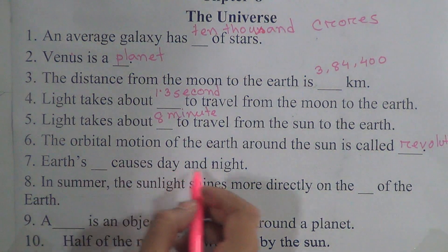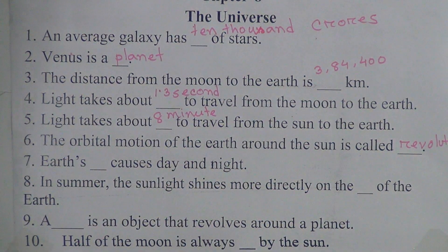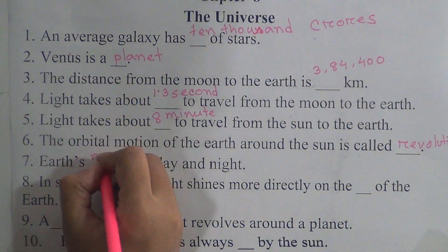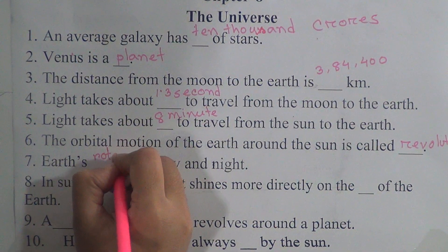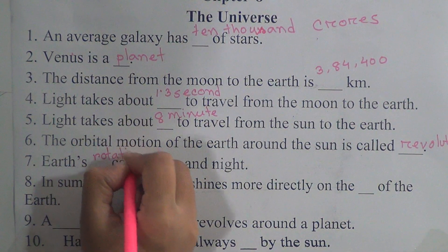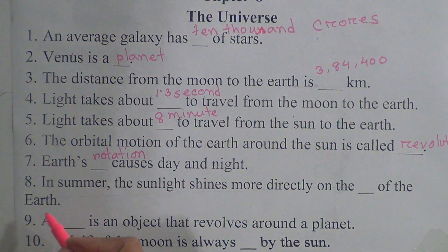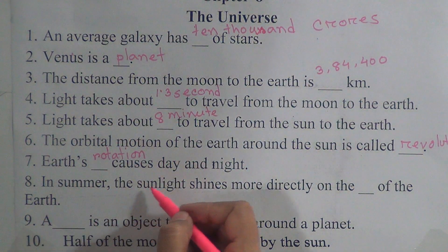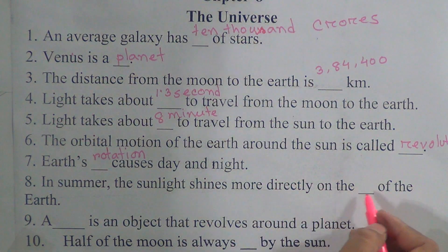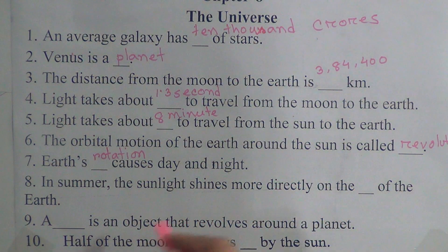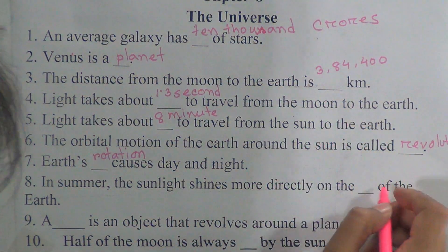Number seven: earth's rotation causes day and night. Number eight: in summer, the sunlight shines more directly on the northern half of the earth.